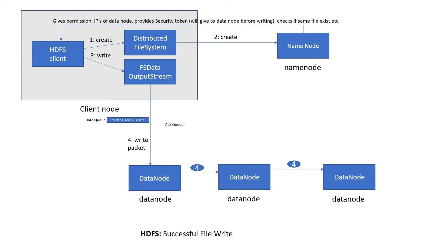If you see data node number four, it creates a pipeline with another data node and performs a write operation based on replica three. Once this write happens successfully, we will have an acknowledgement, and the acknowledgement queue will hold that acknowledgement and send it to the FS data output stream.